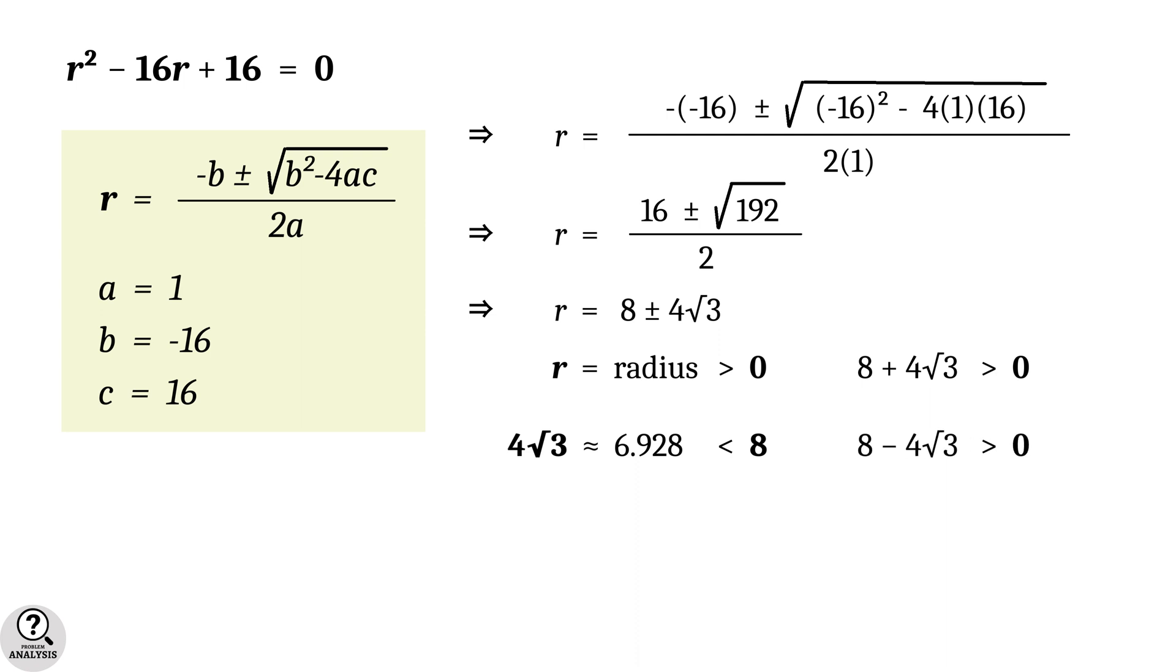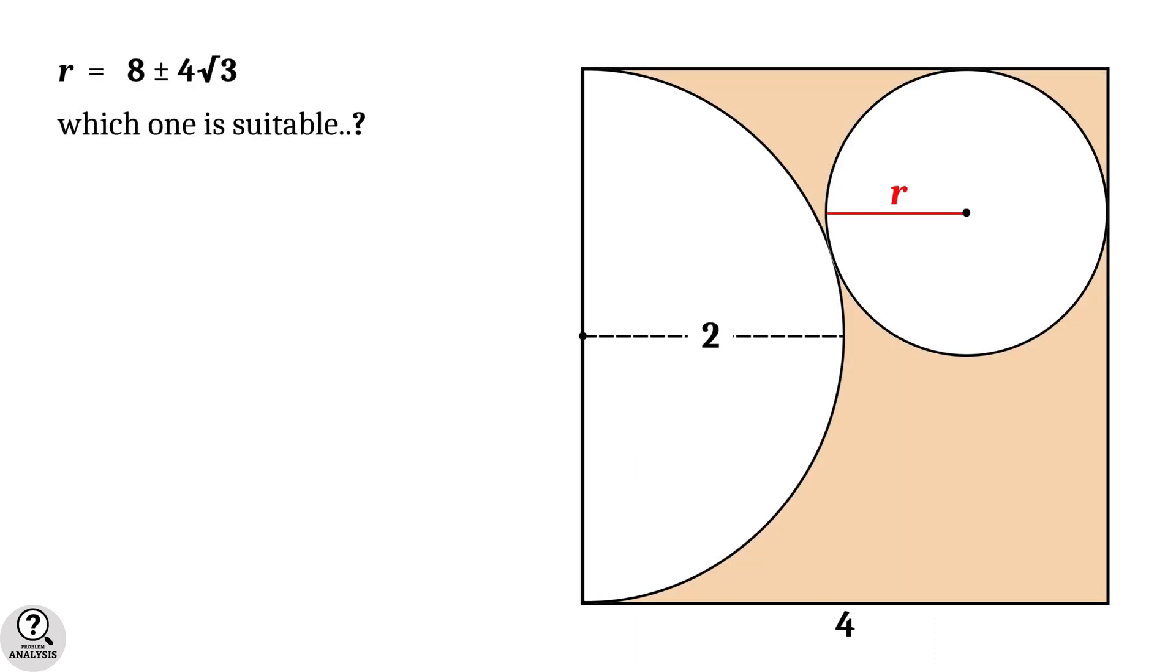We need to find which one of these is the suitable value of r. To understand that, come back to the diagram. Suppose r = 8 + 4√3. The circle is lying completely inside the boundary of the square. Therefore, radius of the circle should be less than the side length of the square. That is, r should be less than 4.